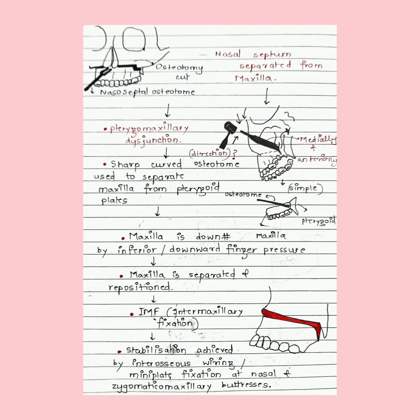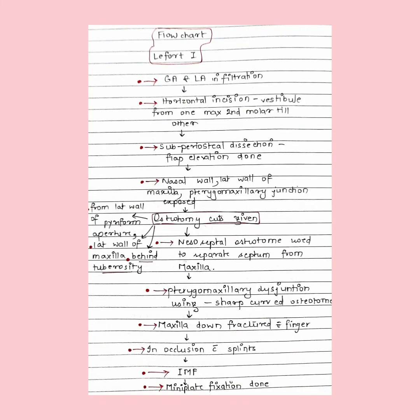Let us summarize this technique with the help of this flowchart. You must draw diagrams because, just like anatomy, it is important to use illustrations for oral surgery. The procedure is carried out under general anesthesia with local anesthetic infiltration in the mucosa. A horizontal incision is given in the maxillary vestibule from one maxillary second molar to the other.